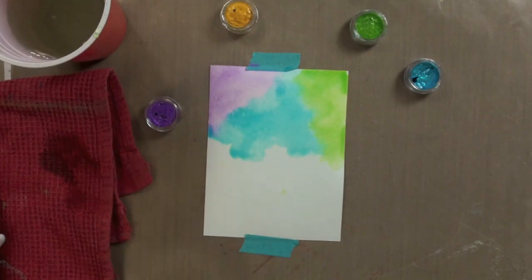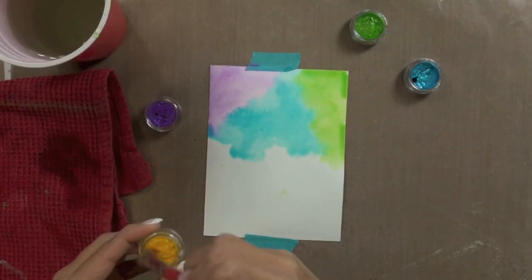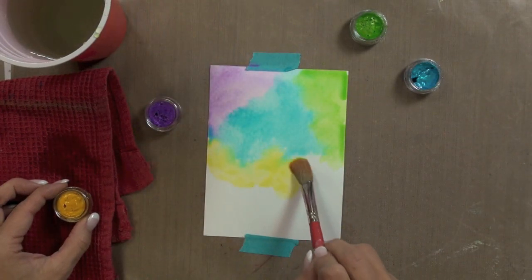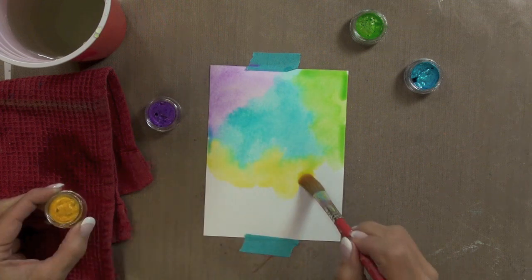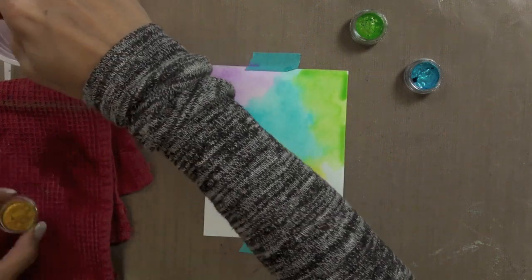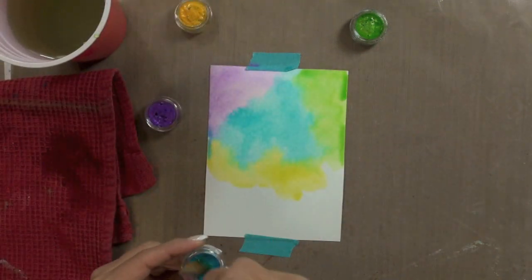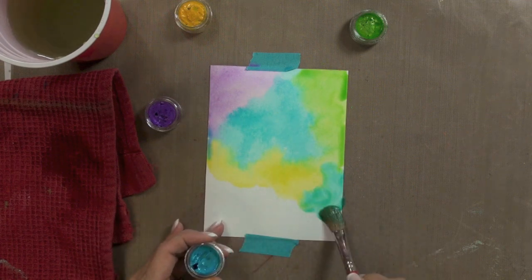So for each color I made sure I was starting off with a clean brush. I dipped it into water and then rubbed my brush into my little twinkling H2O pot to try to pick up a generous amount of pigment. I then started applying the color to my watercolor paper.